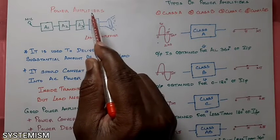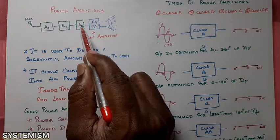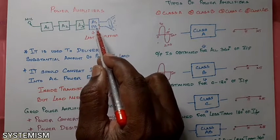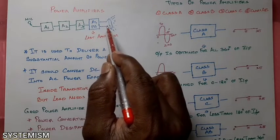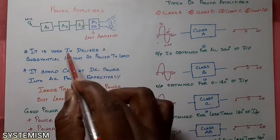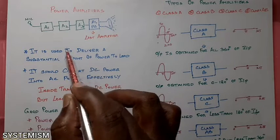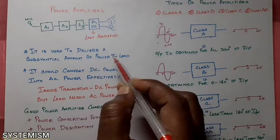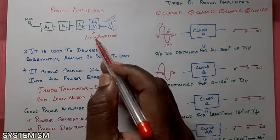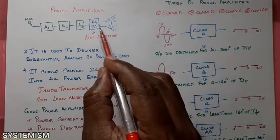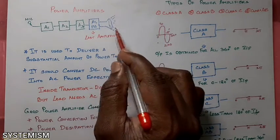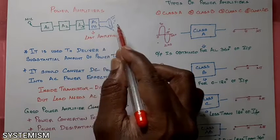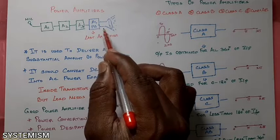Why is it called a power amplifier? Because normal amplifiers will just amplify, but a power amplifier should amplify and provide a lot of power to the load. By definition, a power amplifier is used to deliver a substantial amount of power to the load. It needs to deliver much power to the load because more power is required to drive the load. This amplifier should have the quality to provide more AC power to the load.